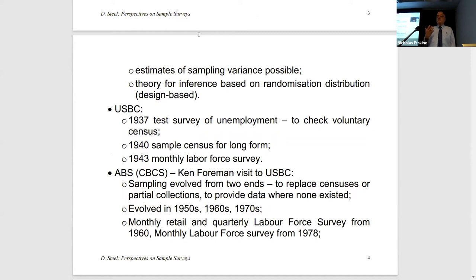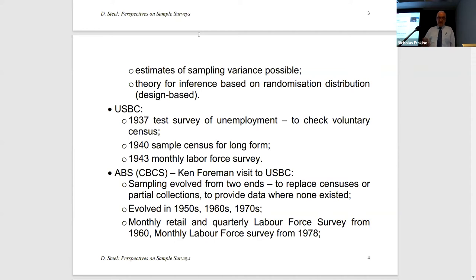The US Bureau of the Census is where a lot of early development went. I think it was partly because of name and influence, but also because of the Depression — usually a crisis is good for statistics. When things are going badly you need to measure them. The Depression pushed a lot of this development. In 1937 there was a test survey of unemployment to check a voluntary register — interesting to use a probability sample to check an administrative data source. The use of the long form on a sample within the census was introduced in 1940, and the labor force survey became the Current Population Survey in 1943.